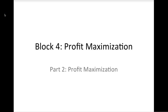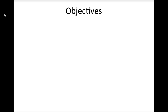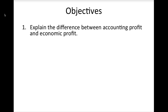Today we are going to study how a firm makes its output and input decisions to maximize profits. By the end of this lesson you should be able to do the following things. First, you should be able to explain the difference between accounting profit and economic profit.